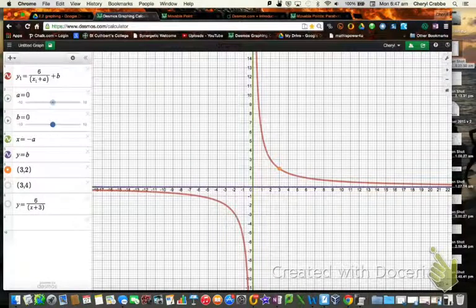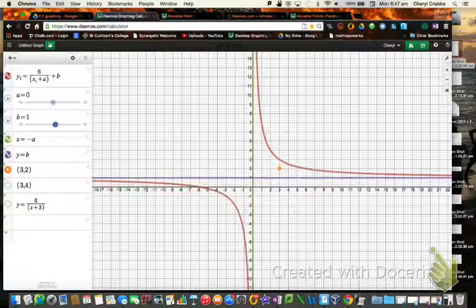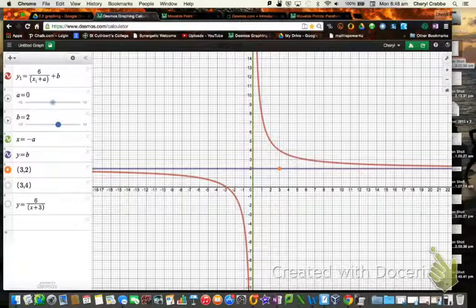Now we want to see what happens when we slide and change the value of B. And so we'll just move this again. We'll move it 2 to 2, positive 2. And just like in quadratics, when we move that to a positive 2, the graph moves up. So the point that used to be here is now up here. It's moved up 2.